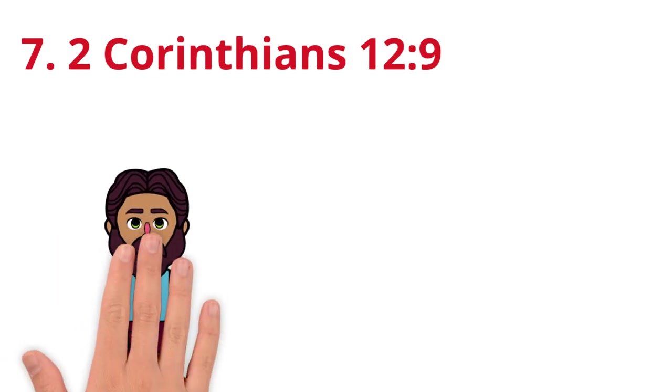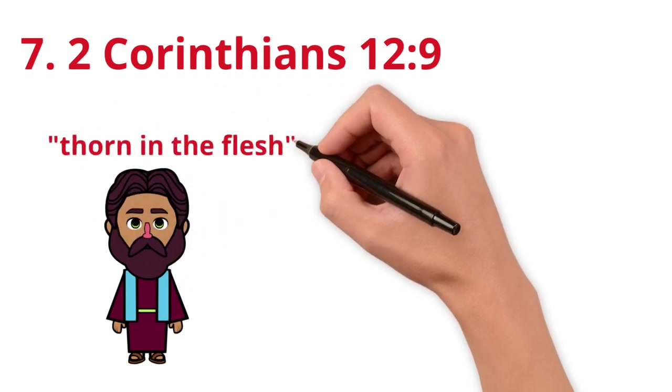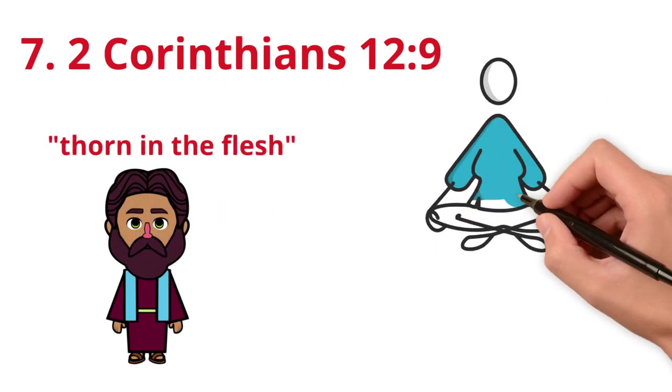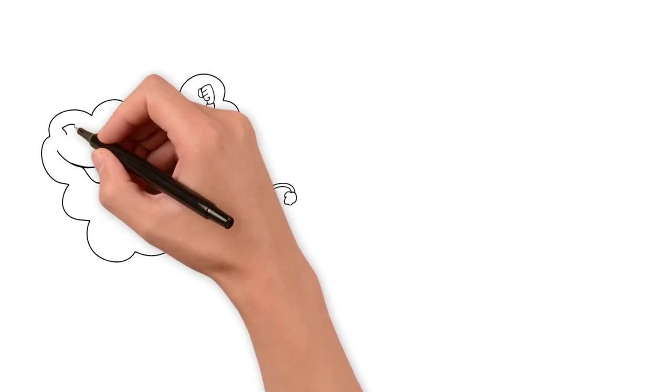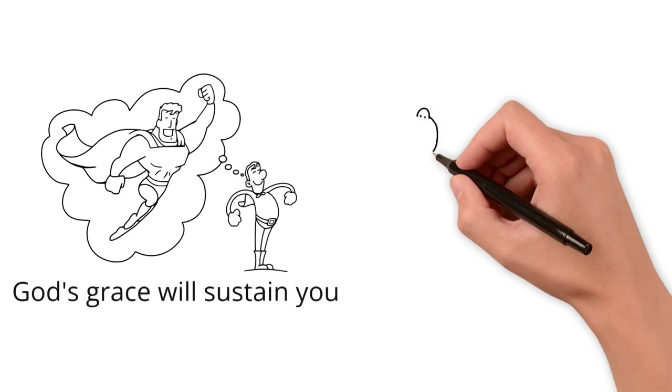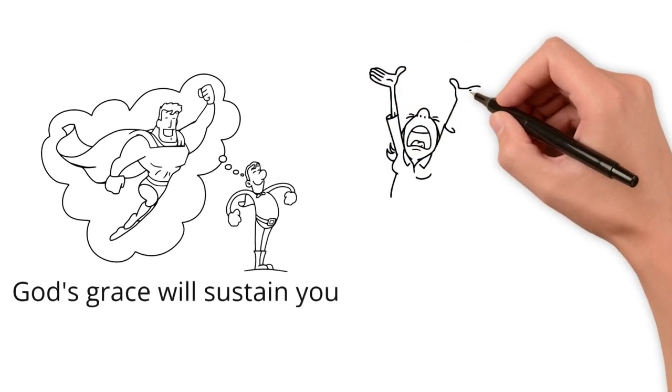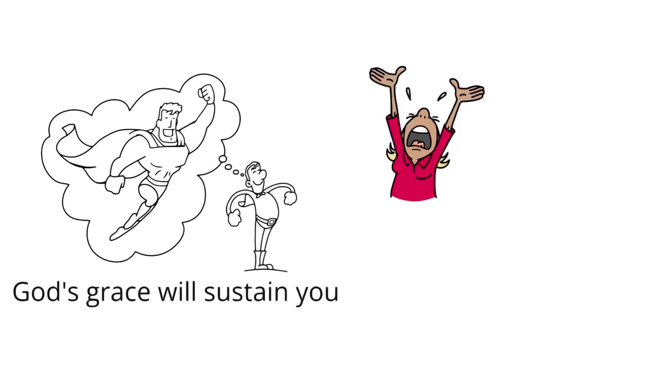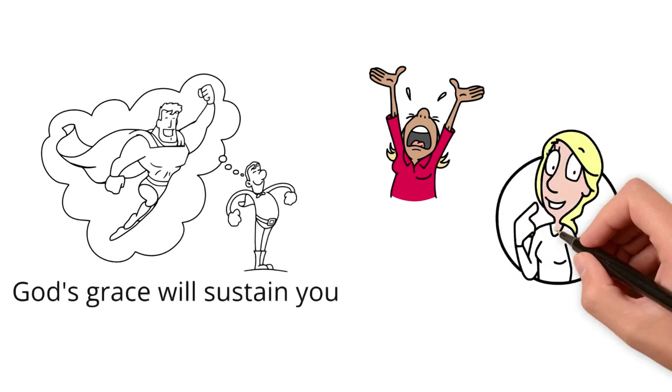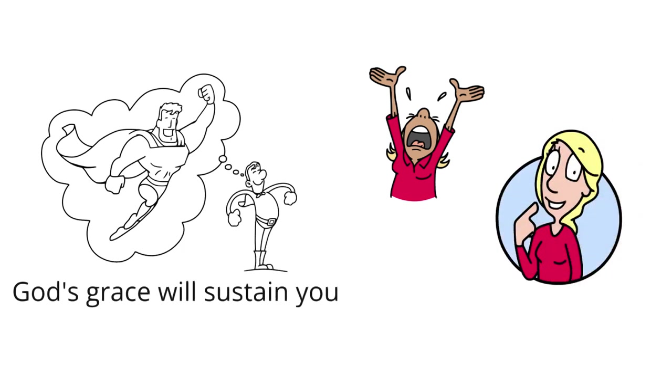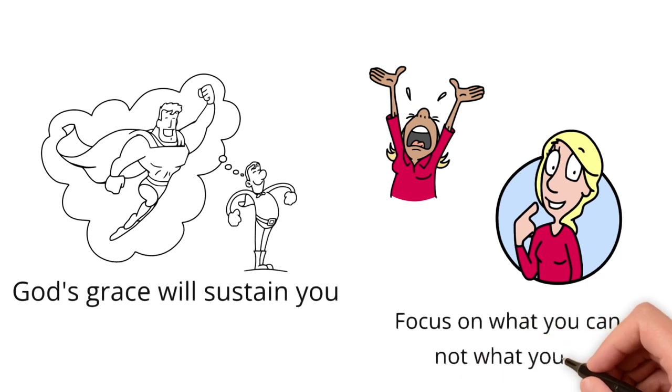Context: Paul speaks of a thorn in the flesh that tormented him, but he found peace in God's assurance that his grace was enough. Tip: Embrace your weaknesses, knowing that God's grace will sustain you. Here's a real example: When you feel overwhelmed by your limitations, remind yourself that it's okay not to be perfect. In fact, God looks for those who are imperfect. Lean on God's grace and focus on what you can do, not what you can't.